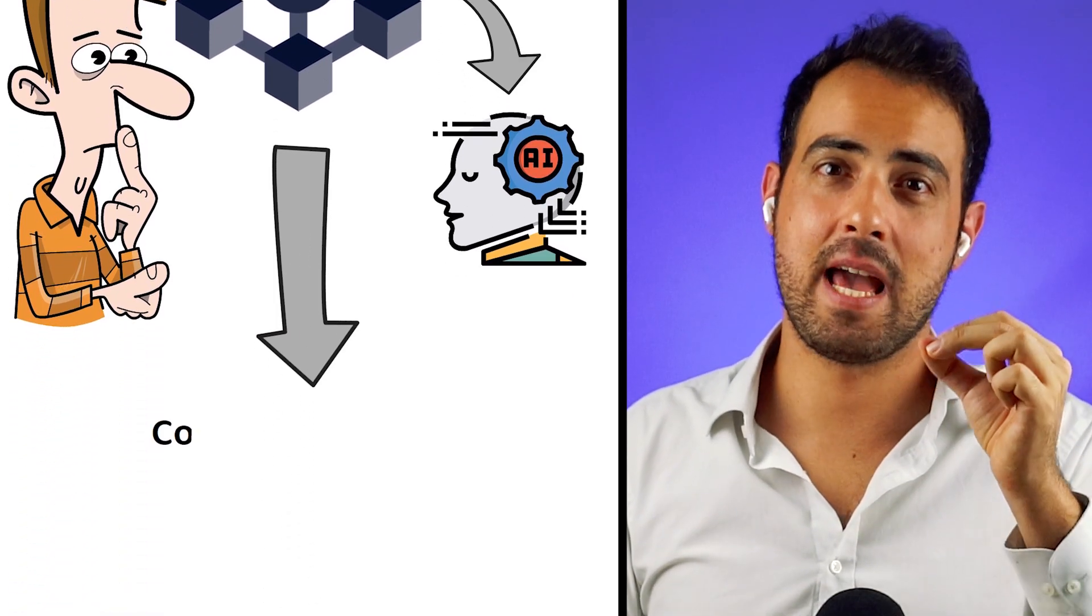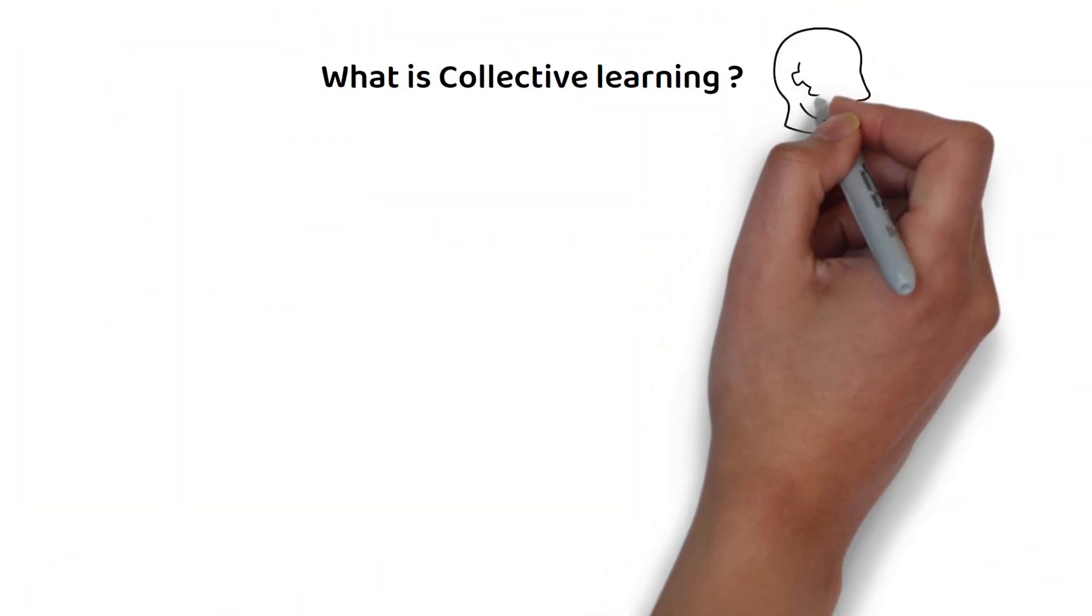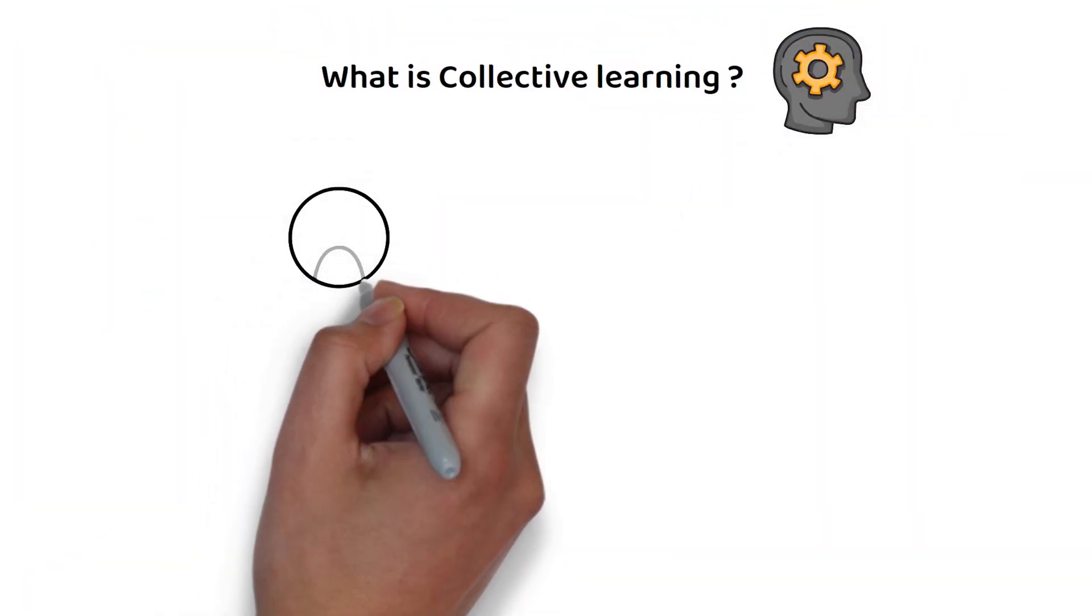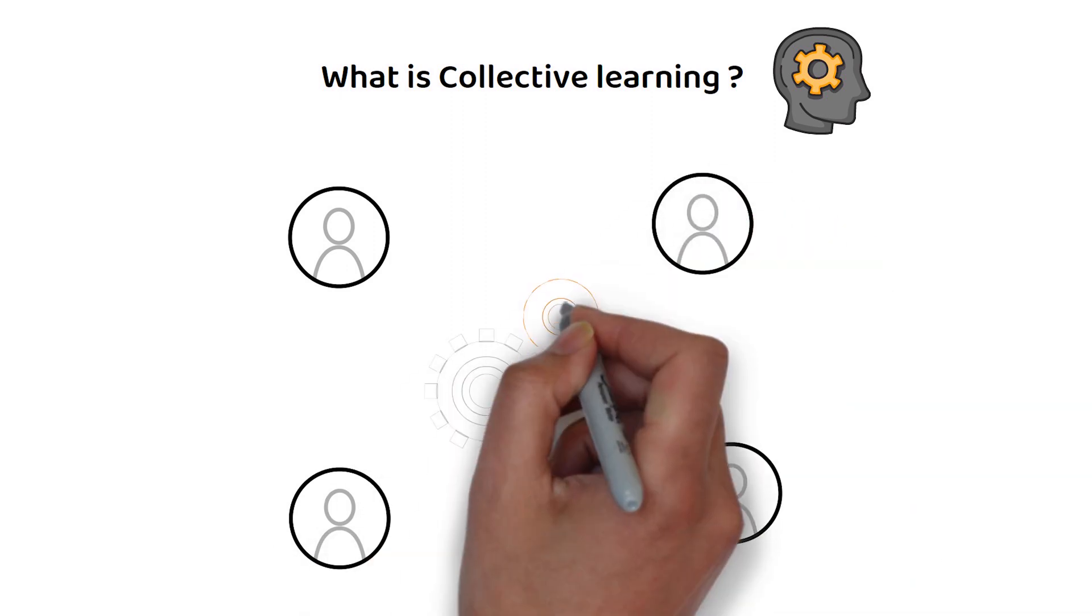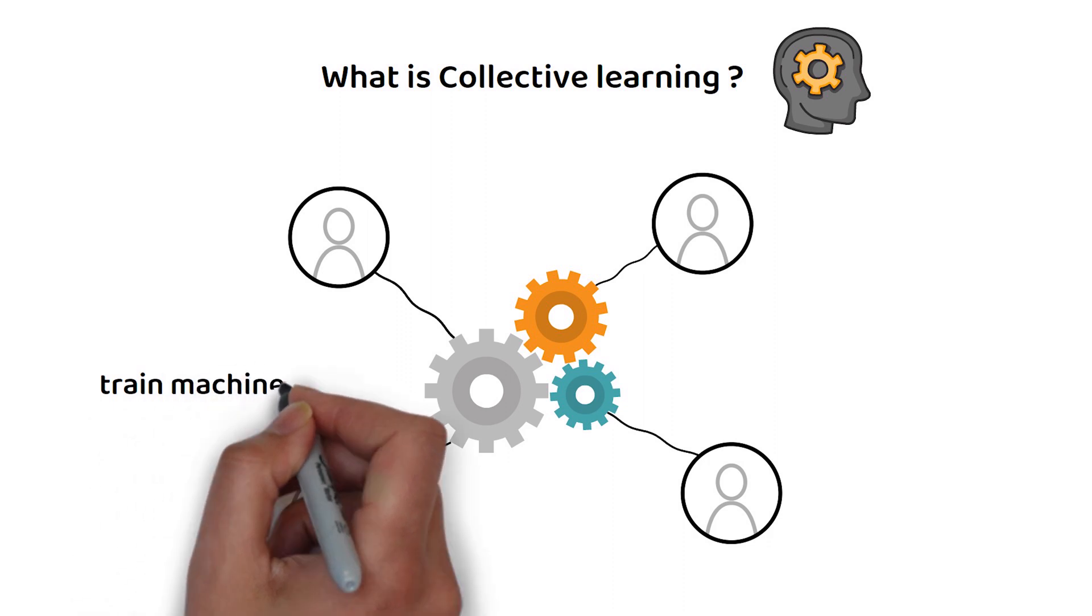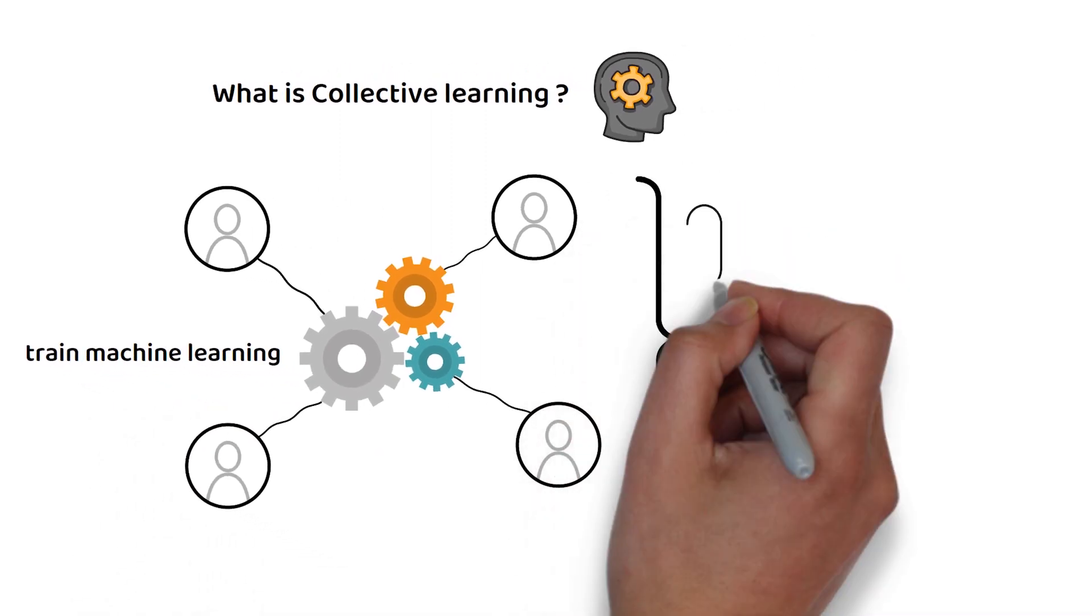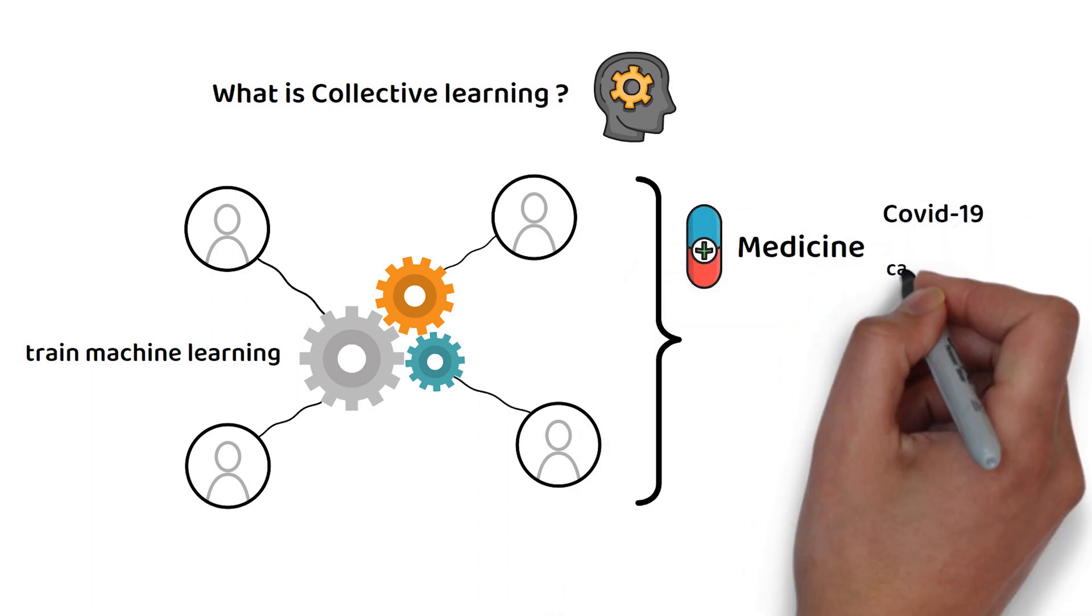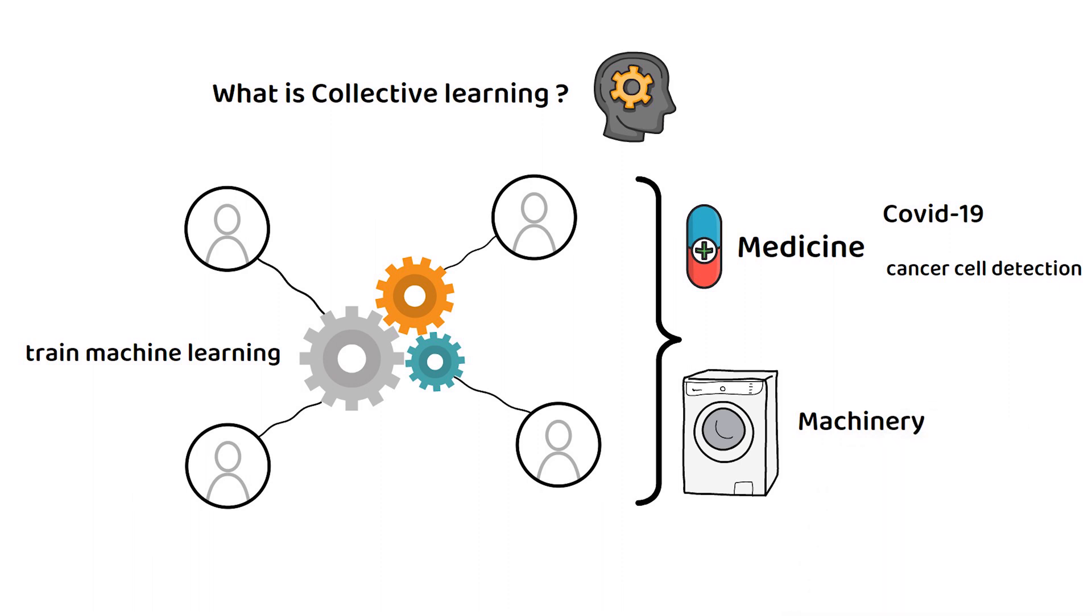For example, the Fetch.ai platform utilizes collective learning. Collective learning is a technique that enables individuals to work together to train machine learning without sharing any of the underlying data with any of the individual participants. So far, these have been used in medicine for COVID-19 and cancer cell detection and in machinery providing predictive maintenance.